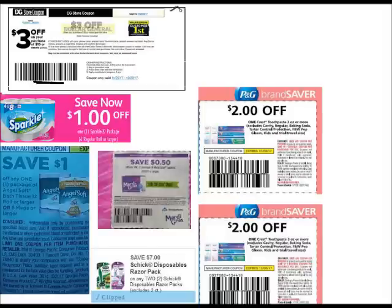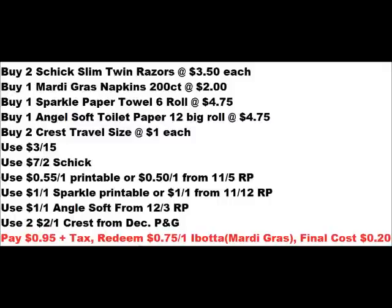I will put a link to that video in the description box of this video. So let's move on to our written breakdown. You're going to buy two Chic Slim Twin Razors at three dollars and fifty cents each, buy one of the Mardi Gras napkins 200 count at two dollars each. Just a little note — the Mardi Gras napkins might not be in the paper towel aisle; they might be in the paper plate aisle, oddly enough. You're also going to buy one Sparkle paper towel six-roll at $4.75 — that's a sale this week. The Angel Soft toilet paper 12 big roll is also on sale this week for $4.75.